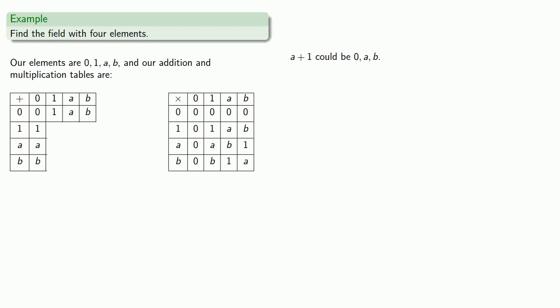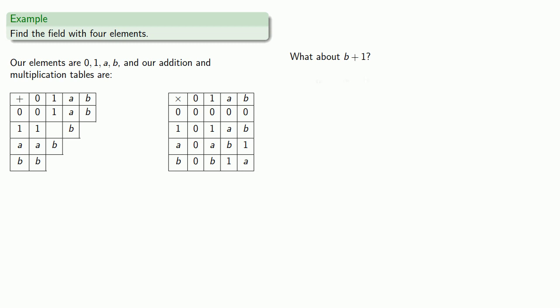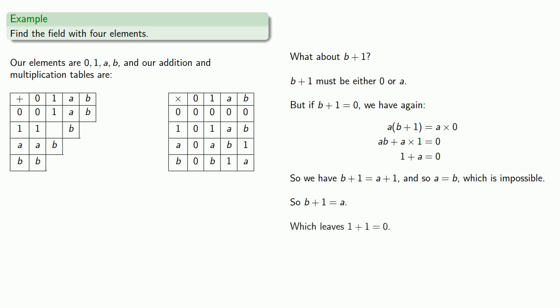What if a plus 1 equals a? Then 1 would be the additive identity, which is impossible. So a plus 1 can't be a, leaving only a plus 1 equal to b. What about b plus 1? It's either 0 or a. But if b plus 1 equals 0, by commutativity we'd get b plus 1 equal to a plus 1, so a equals b, which is impossible. So b plus 1 has to be a, which means 1 plus 1 has to be 0.